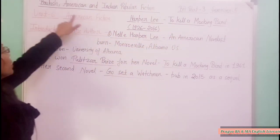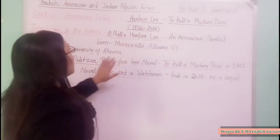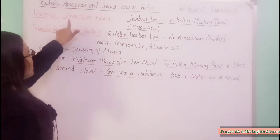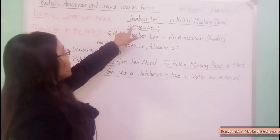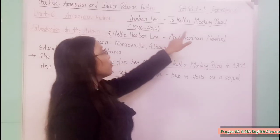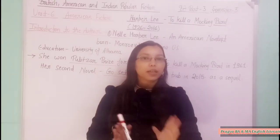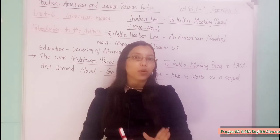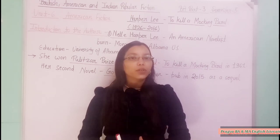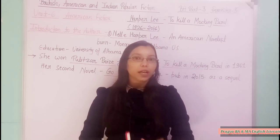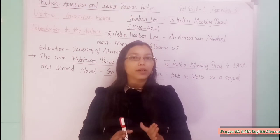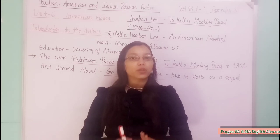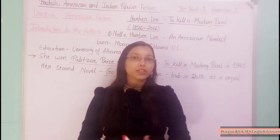Your paper name is British, American and Indian Popular Fiction. This topic is given in Unit 6 American Fiction. In Unit 6 American Fiction, Harper Lee's novel To Kill a Mockingbird is given in your syllabus. We have already covered topics from Unit 1 to Unit 6. You will find a link in the description box and in the playlist for B.E. Part 3, Semester 5, British American and Indian Popular Fiction. This is for all UP State University students.